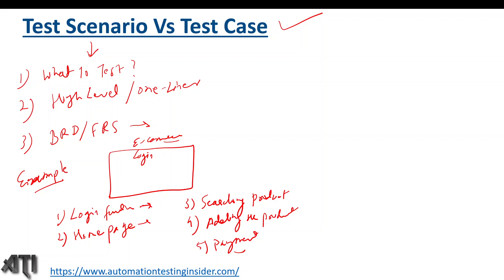These scenarios cover the end-to-end functionality of any application. You can see it has only one-liner information — for example, login functionality does not contain all the details about login. We only have high-level information in a test scenario.